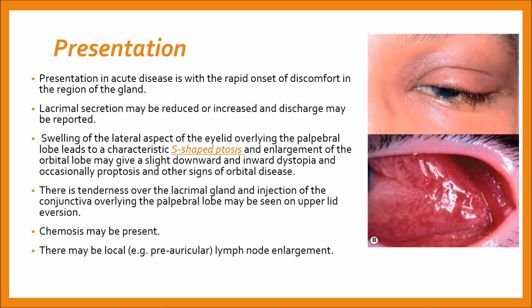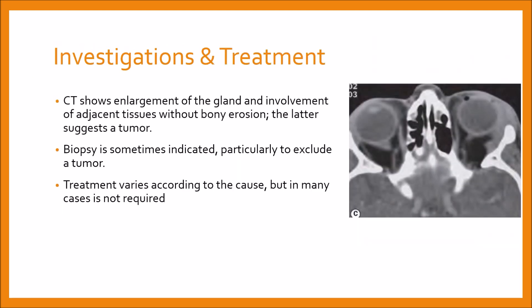There may be local lymph node enlargement, for example pre-auricular. CT scan shows enlargement of the gland. In this CT scan picture there is enlargement of the gland and infiltration of the adjacent tissues, but there is no bony erosion, which would suggest a tumor. Biopsy is sometimes indicated, particularly to exclude a tumor.